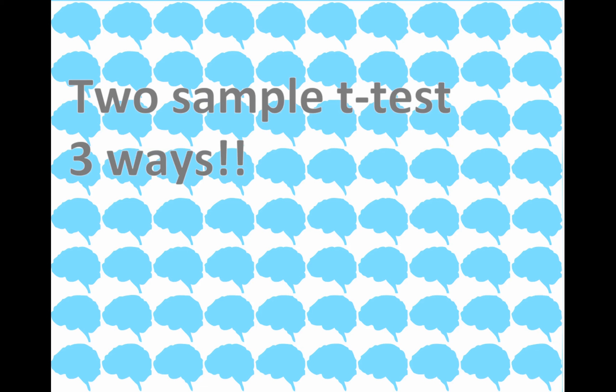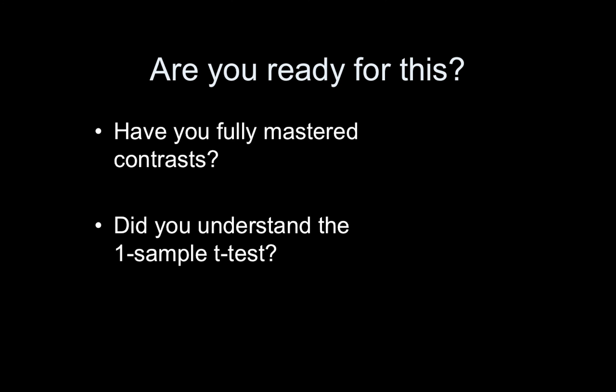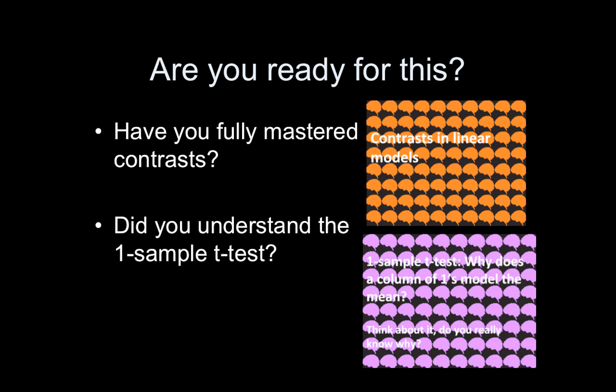Welcome to the two-sample t-tests lecture. I'm going to go over three different ways of setting this up using the GLM. Before we get to that, make sure you're ready: you should have a firm grasp on how contrasts are constructed for regression models and be comfortable with the one-sample t-test. If not, revisit the contrasts and linear models lecture or the one-sample t-test lecture, or both.